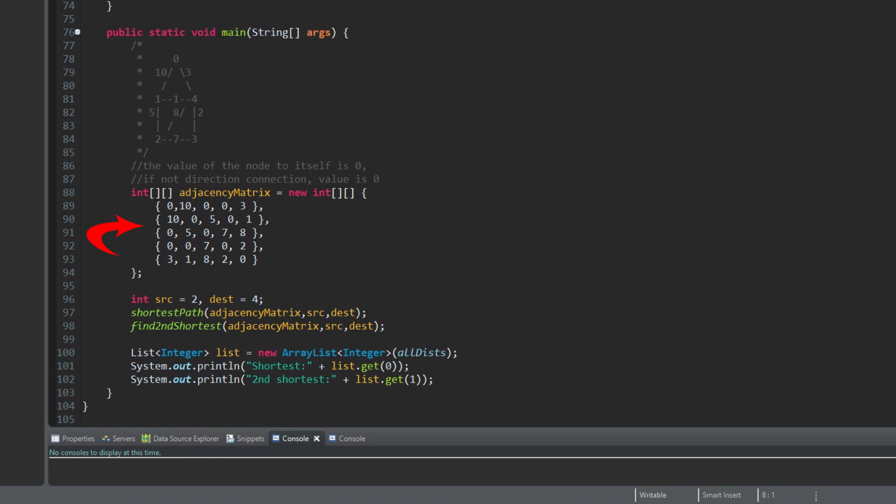In the main function, we define an adjacent matrix, the source, and the destination. Then call shortest path and find second shortest. Now we print the result.